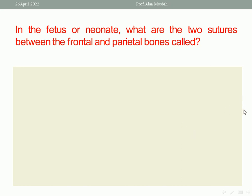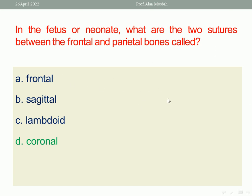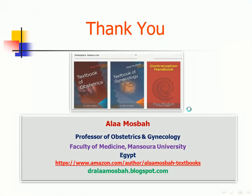Final question: In the fetus or neonate, what are the two sutures between the frontal and parietal bones called? Options: frontal, sagittal, lambdoid, or coronal. The best one response here is coronal suture, because the coronal suture lies between the frontal bones and the parietal bones. Thank you — try to remember the three books published by me on Amazon: Textbook of Obstetrics, Textbook of Gynecology, Contraception. I hope it is beneficial for you. See you next lecture.